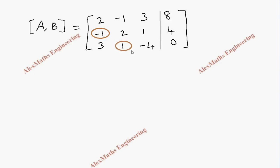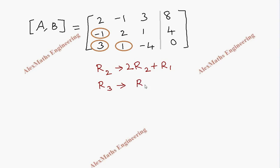The lower triangular elements we have to make zero. First, we are going to make this -1 as zero. For that we do: R2 gives R2 plus 2 times R1. When I multiply R1 by 2 we get -2 in the first position; when I add with R1's element which is 2 we get 0. I am going to do this row operation to make this element zero. Similarly for R3, I take R3 — since this is 3 and this is 2, the LCM of 3 and 2 is 6.